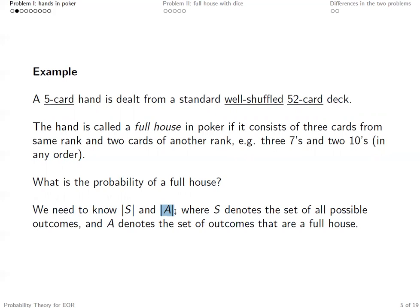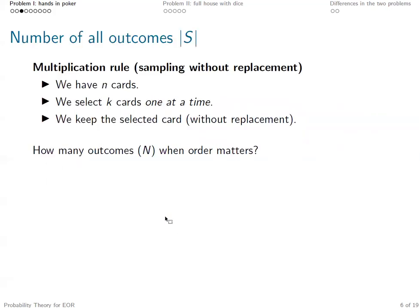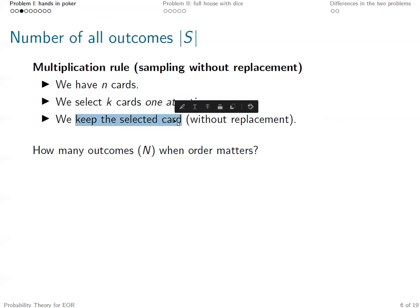So how many outcomes are a full house, and how many possible outcomes are there in total? Let's first calculate the number of all possible outcomes. We're going to apply the multiplication rule. In this problem, it's going to be sampling without replacement. We have N cards and we need to select K cards, selecting one card at a time, keeping each selected card without putting it back.